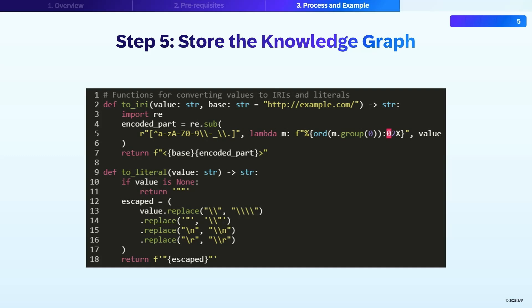An IRI ensures that each object in the graph has a unique standard name that will work in databases and on the web. For literals, such as names or numbers, all special characters must be escaped so that the data is not corrupted when stored. This is why helper functions are needed before inserting triples, otherwise the data may not load or cause errors later.